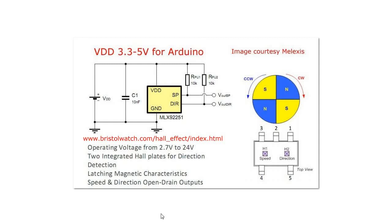Here is your speed and direction outputs. They're open drain so you will need pull-up resistors. Here's the outputs that you could send to an Arduino. This works at five volts. Here is this illustrated again.